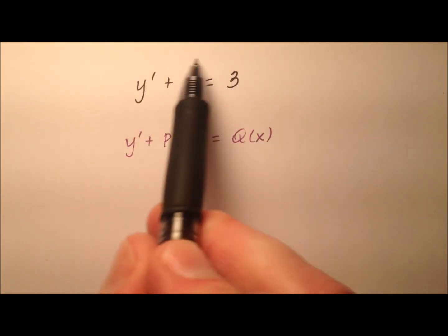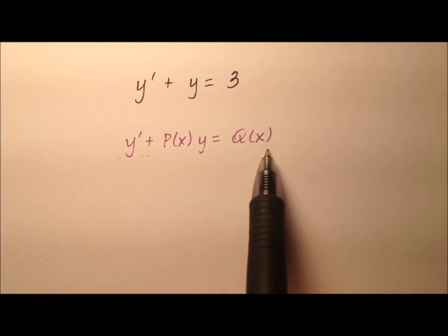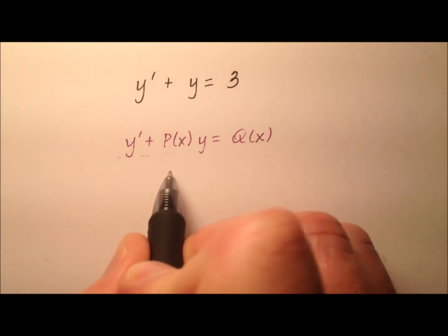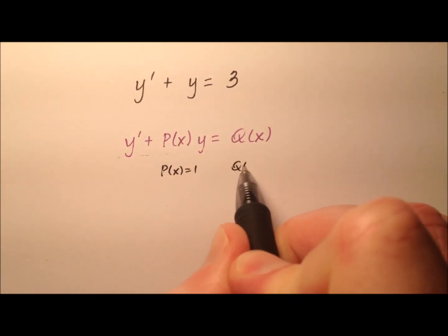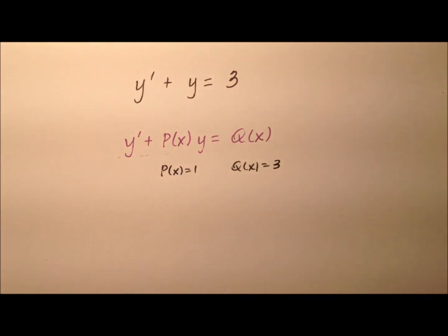Our equation is already written in this form and it looks like P(x) is just going to be 1 and Q(x) is going to be 3. So both constants, this won't be too bad at all.